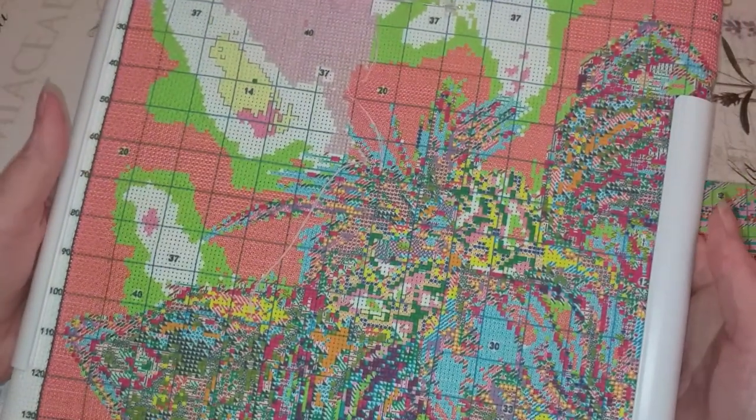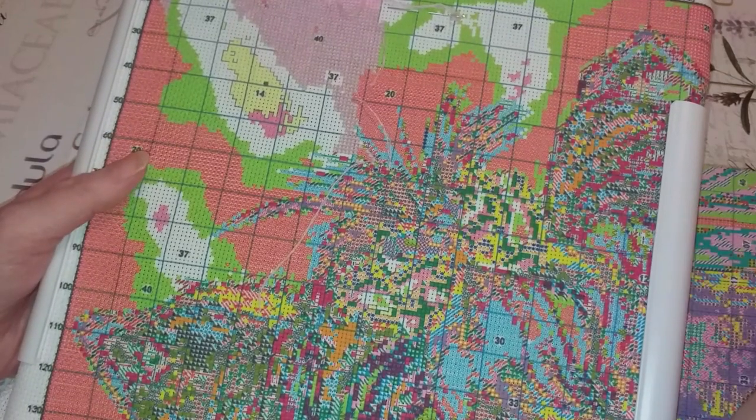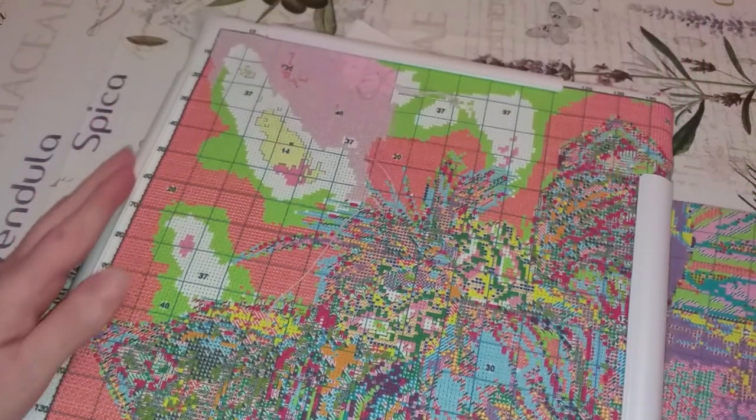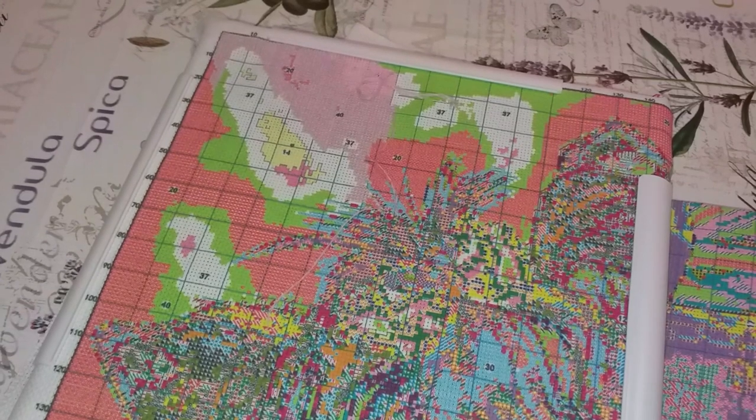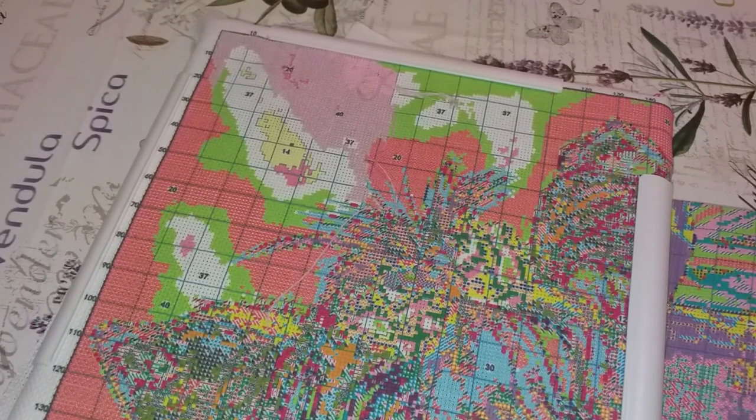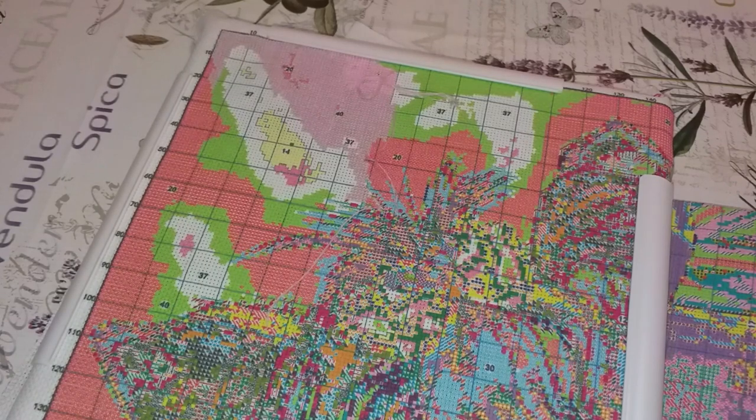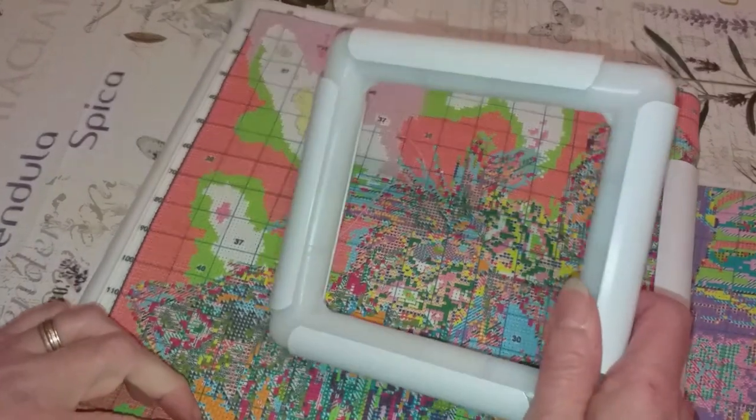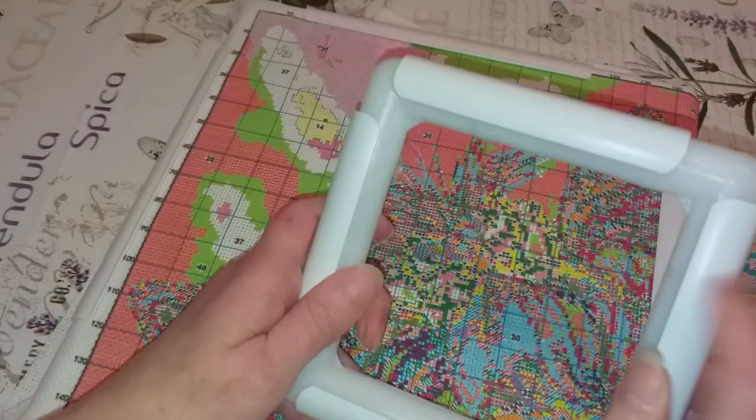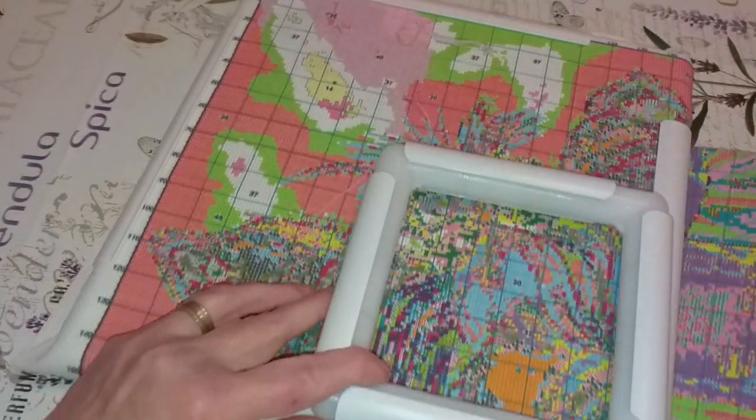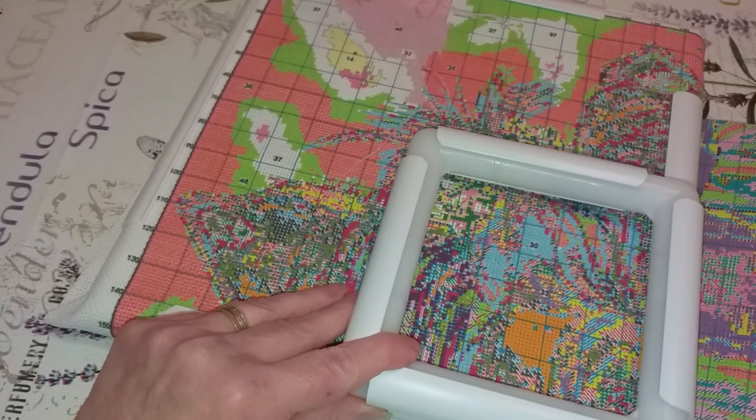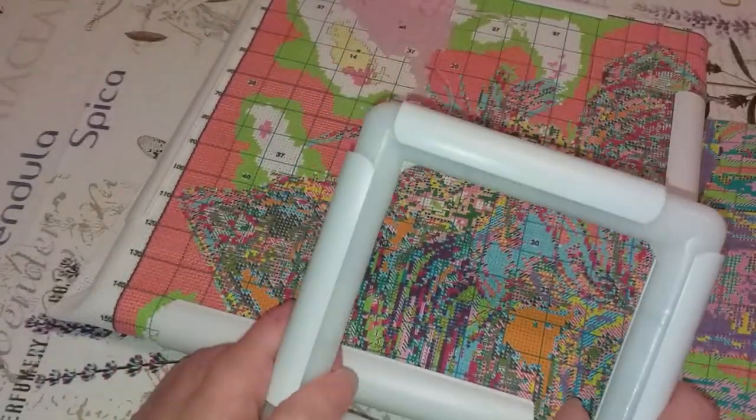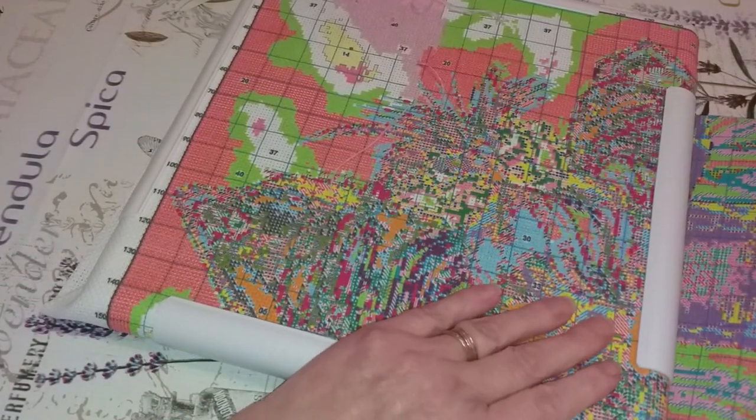Donc voilà, voilà ce que c'est le Q-Snap. Vous en avez de plusieurs tailles, j'en ai un déjà plus petit il est juste là. Ça fait longtemps que je l'ai. Je l'avais eu à la maison du canevas je crois. Voyez, c'est pas du tout la même taille il fait qu'un centimètre. Donc là pour faire le petit motif.